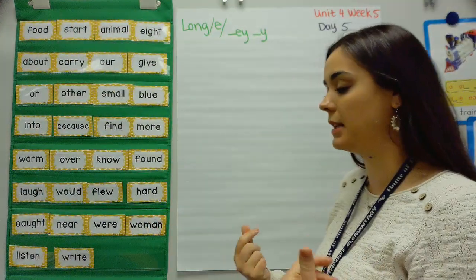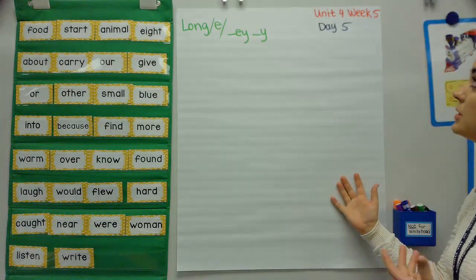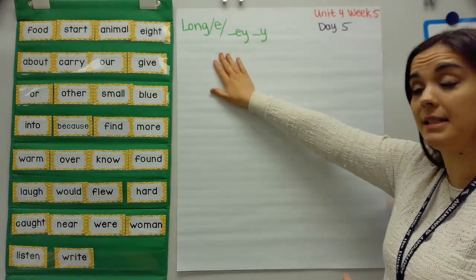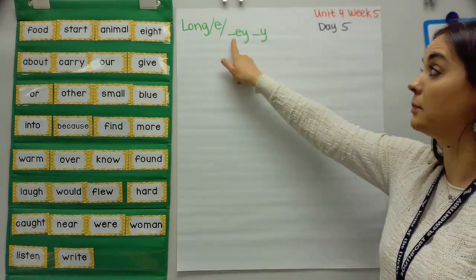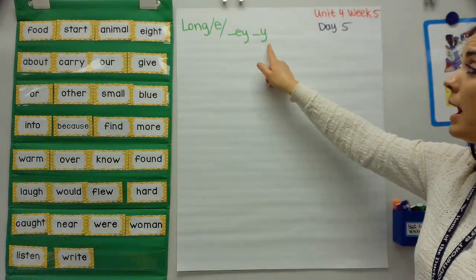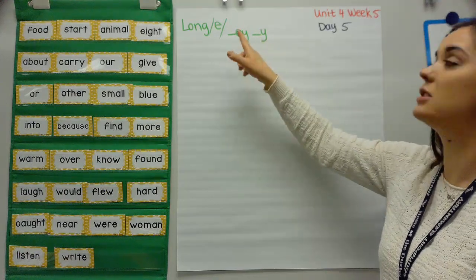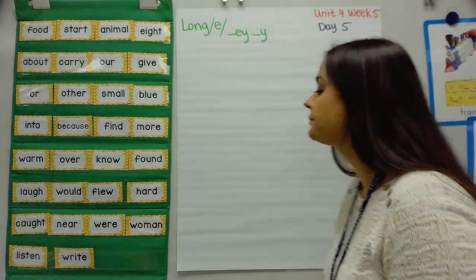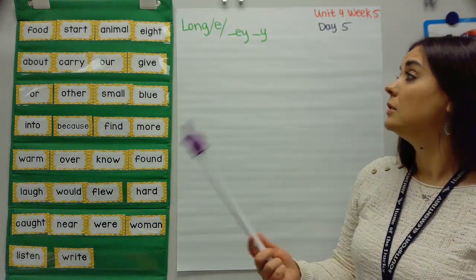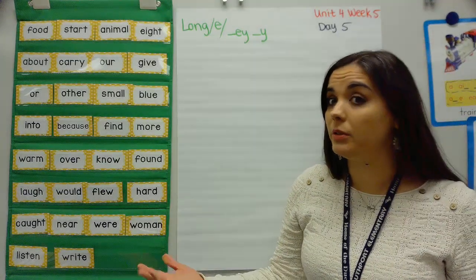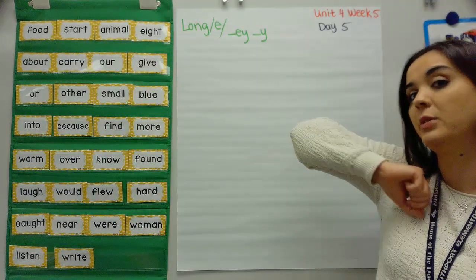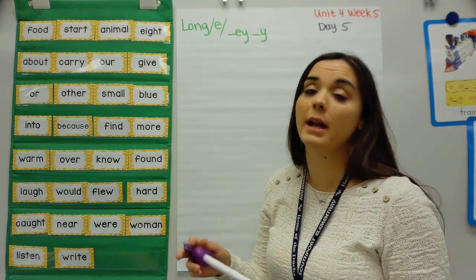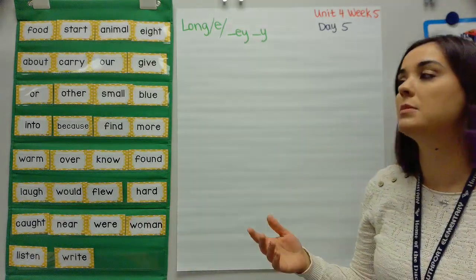Hey folks, welcome to our blending lesson today. So today's unit four, week five, where we are wrapping up that long E sound that can be spelled with either blank EY or blank Y. Remember, those blanks just mean that there will always be a letter or a sound that comes before it. All right, so let's practice high frequency words. Next week we're going to start a brand new unit with a whole new group of high frequency words. So of course, make sure you're focused and paying attention, and go back and review the video on your own time to really help you.